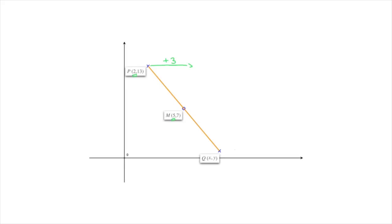In a similar way, we can see that to get from P to M, since the y-coordinate of point P is 13 and the y-coordinate of point M is 7, we'd have to move 6 units downwards. So that would be negative 6. Remember, when we move upwards it's positive, and when we move downwards it's negative.